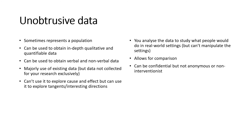You can analyze unobtrusive data to see how people reacted in certain real-world settings, but because it is pre-collected data you cannot manipulate the settings. You can be confidential, but you cannot be anonymous or non-interventionist because you have to reveal who the data is for and the details of the data process to your examiners or reviewers. Use unobtrusive data mainly for comparison — as baseline or historical data — and then collect your own primary data alongside it.